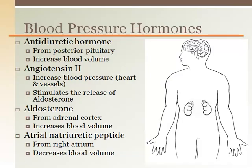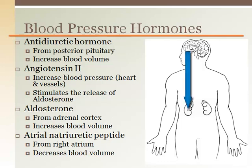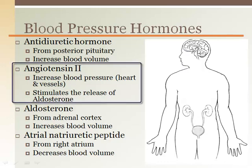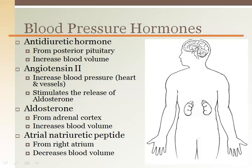Blood flow is also affected by endocrine mechanisms, which are more long-term because they involve hormones acting on the heart, blood, vessels, and kidneys. Antidiuretic hormone comes from the posterior pituitary and targets the kidney to retain more water and sodium, thereby increasing blood volume. Angiotensin 2 is a potent hormone that increases blood pressure — 'angio' refers to vessels, and think of 'tensin' as tense or constricted.